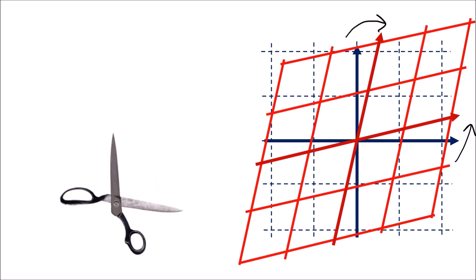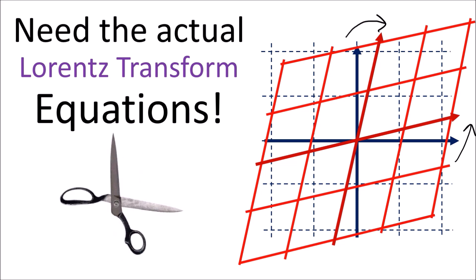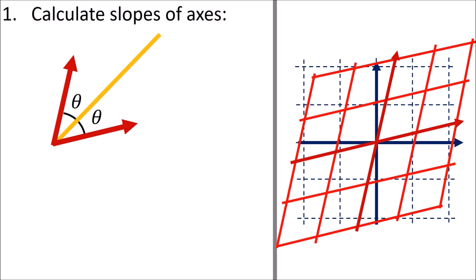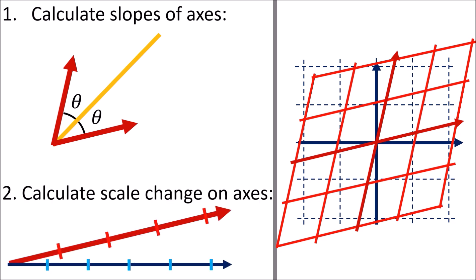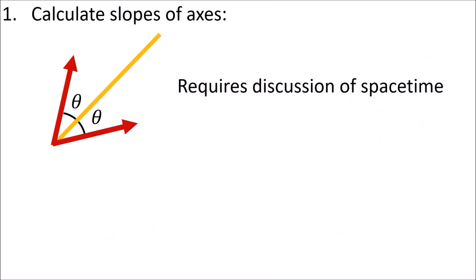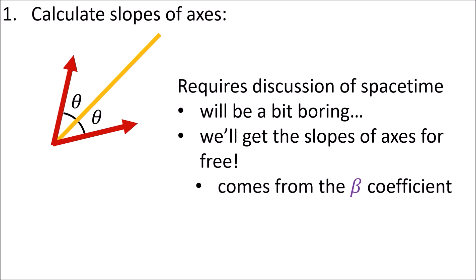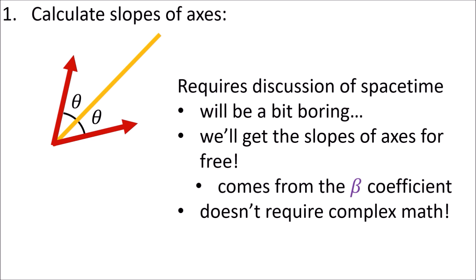To get the Lorentz transformation equations we need to figure out two things: first, the slopes of the new time axis and new position axis according to the old coordinate system; and second, how the spacing changes between units of time and space, which is related to time dilation and length contraction. To get these slopes I'll discuss how we measure time on spacetime diagrams — at the end we get the slopes for free using the beta coefficient, without any complicated math.